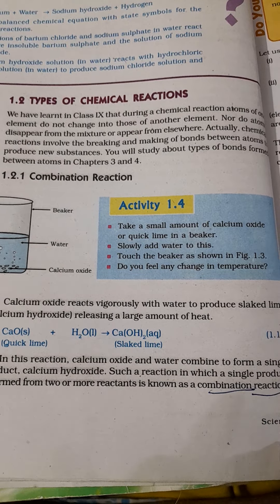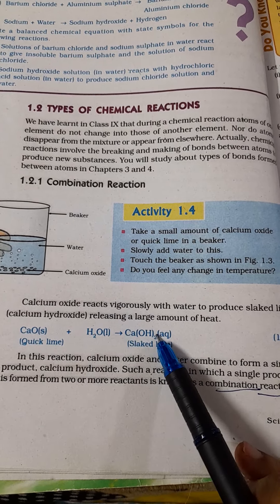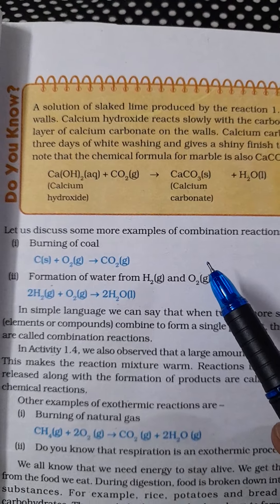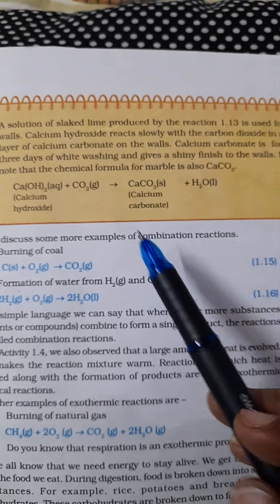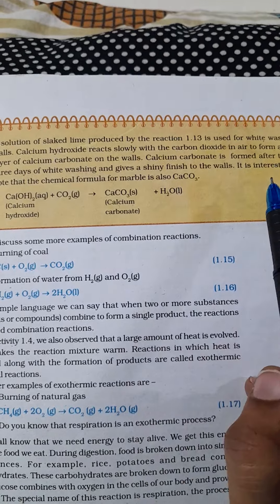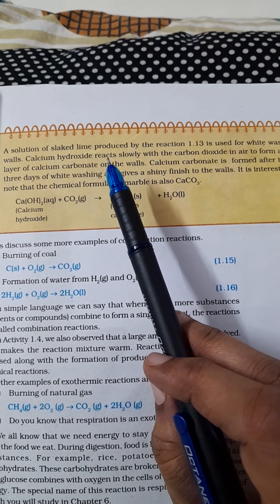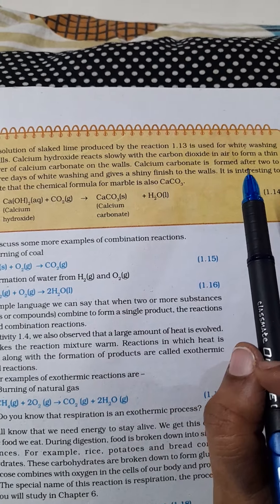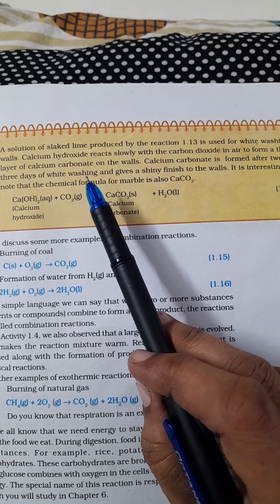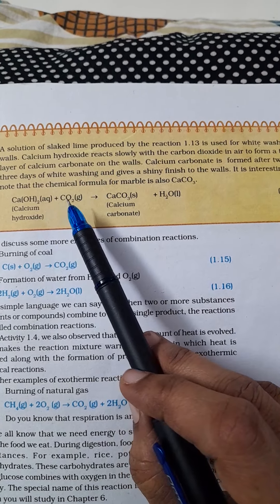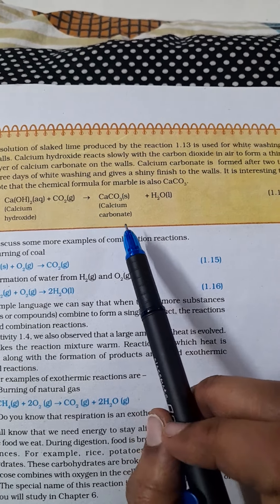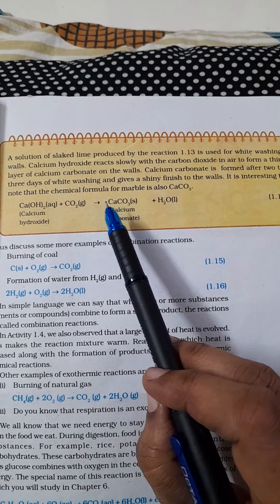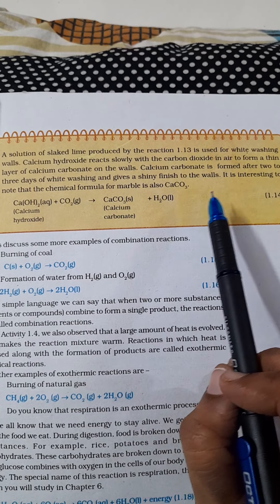We will see more examples of combination reactions, but before that there is one important note. The solution of slaked lime produced is used for whitewashing walls. Calcium hydroxide reacts slowly with the carbon dioxide in the air and forms calcium carbonate. Calcium carbonate is formed after 2 to 3 days of whitewashing, which gives a shiny finish to the walls.